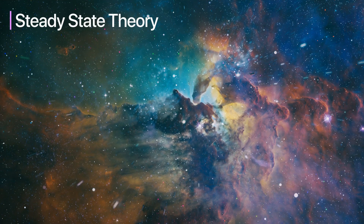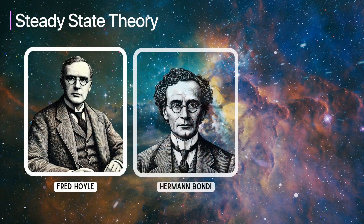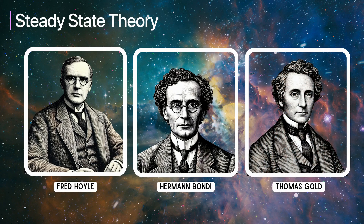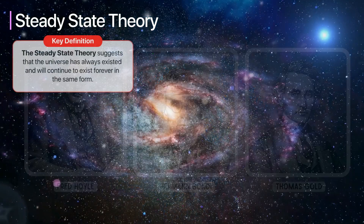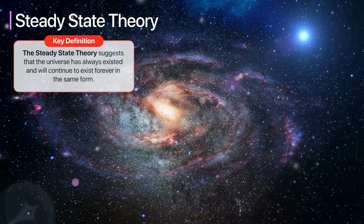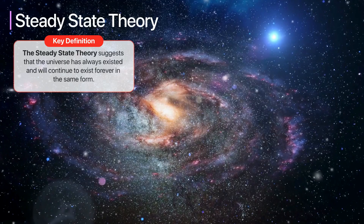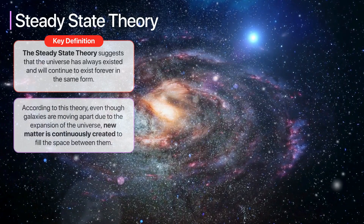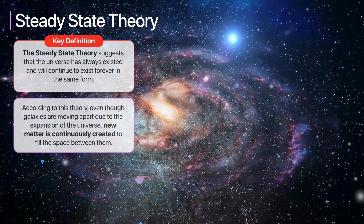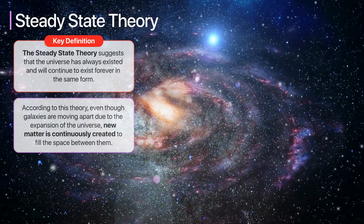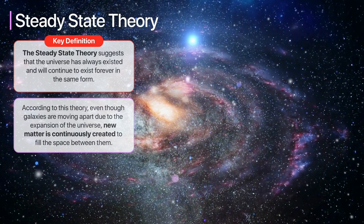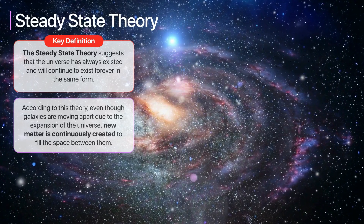In the 1940s, the steady-state theory emerged as an alternative to the Big Bang Theory. Prominent astronomers Fred Hoyle, Hermann Bondi, and Thomas Gold were key proponents of this model. The steady-state theory suggests that the universe has always existed and will continue to exist forever in the same form. According to this theory, even though galaxies are moving apart due to the expansion of the universe, new matter is continuously created to fill the space between them.